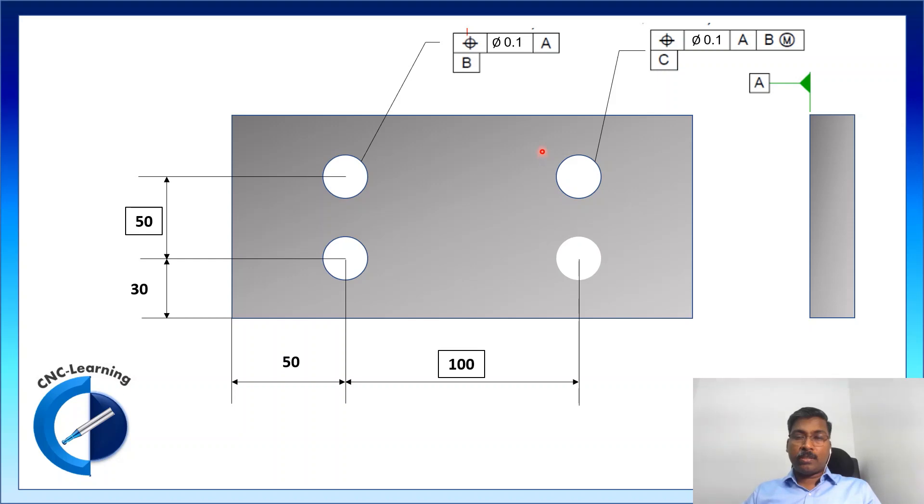Another three holes, the position tolerance is controlled by using two datums. One is this datum plane A and another one is this datum hole.